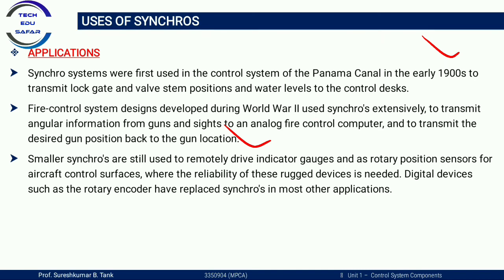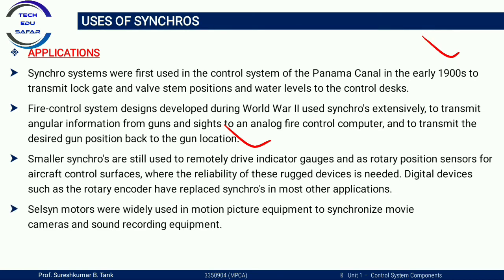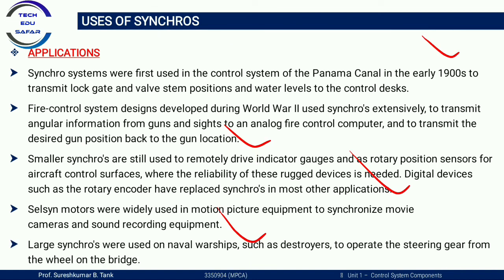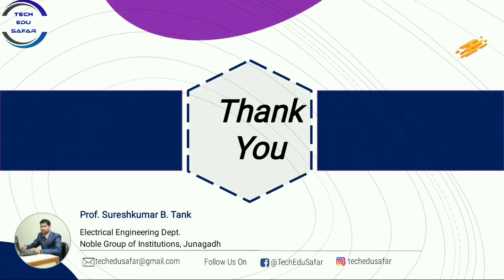Where reliability is needed, digital devices such as rotary encoders have replaced synchros in most applications. Selsyn motors were widely used in motion picture equipment to synchronize movie cameras and sound recording. Large synchros were also used on naval warships such as destroyers to operate the steering gear from the wheel on the bridge. These are the different types of applications of synchros. Thank you for watching.